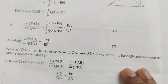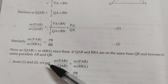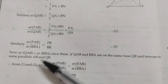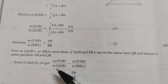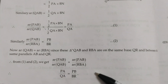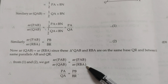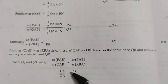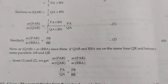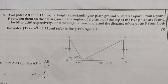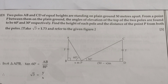Triangles QAB and RBA are on the same base and between the same parallels AB and QR. From equations 1 and 2, area(PAB)/area(QAB) = area(PAB)/area(RBA), so PA/QA = PB/BR. Hence proved.